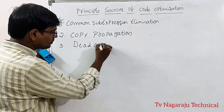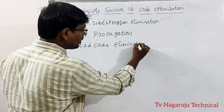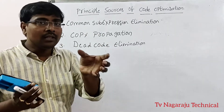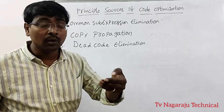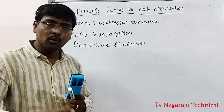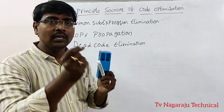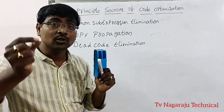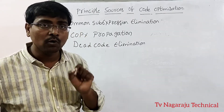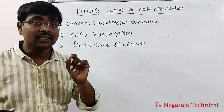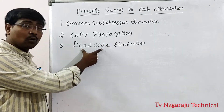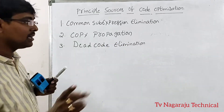The next source is dead code elimination. Dead code means: if within a program some code is unreachable — if the code is not executed during program execution no matter how many times you run it — then there is no use of that code. That is called dead code. If there is no use and the code is never executed, simply remove that unnecessary code. That is called dead code elimination.